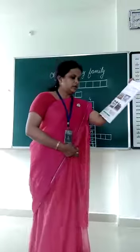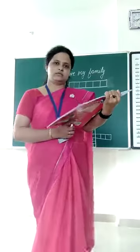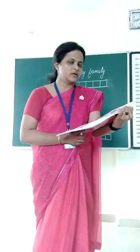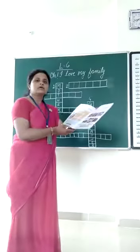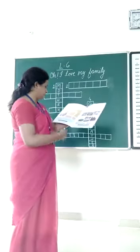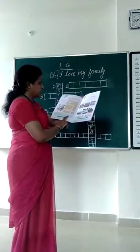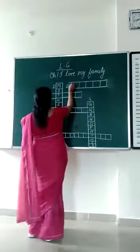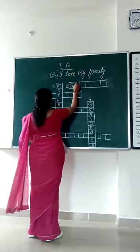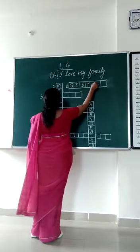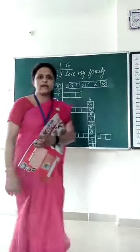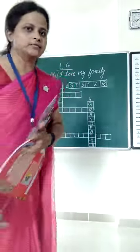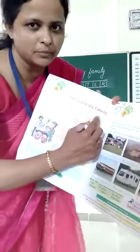Number two is: she helps me in doing my homework. Who helps you doing your homework? Maybe your mother, maybe your sister. So what will you write here? You can write Mother or you can write Sister. I will write Sister. The spelling is S-I-S-T-E-R. You have to write that in this column.